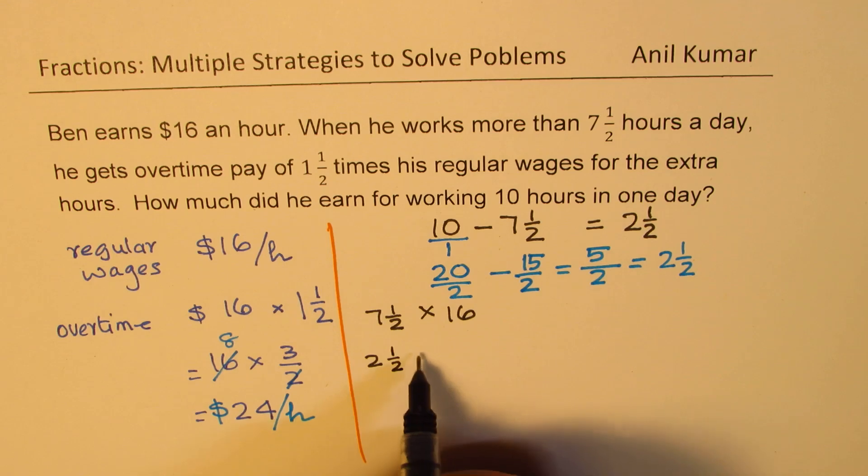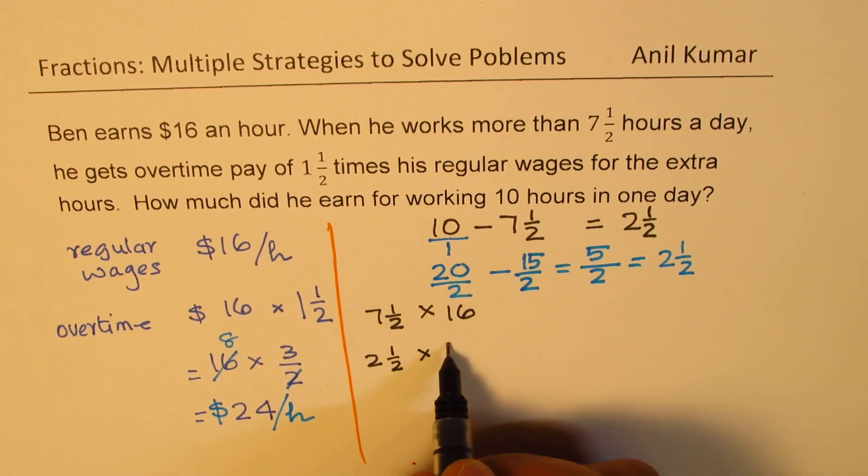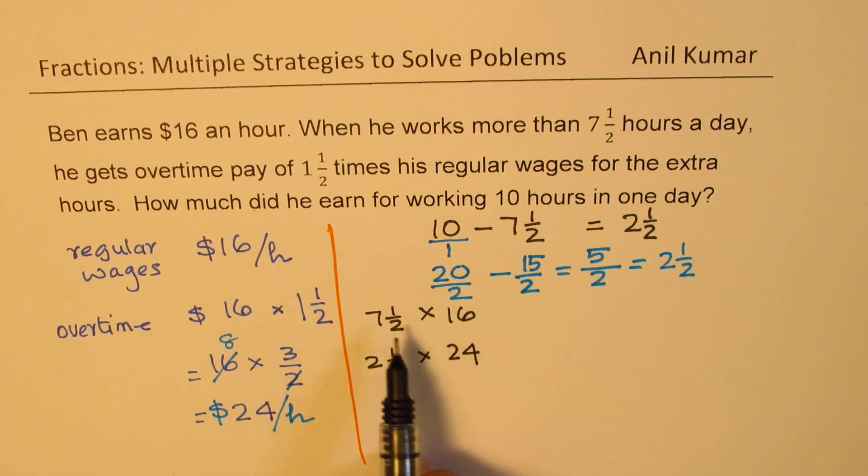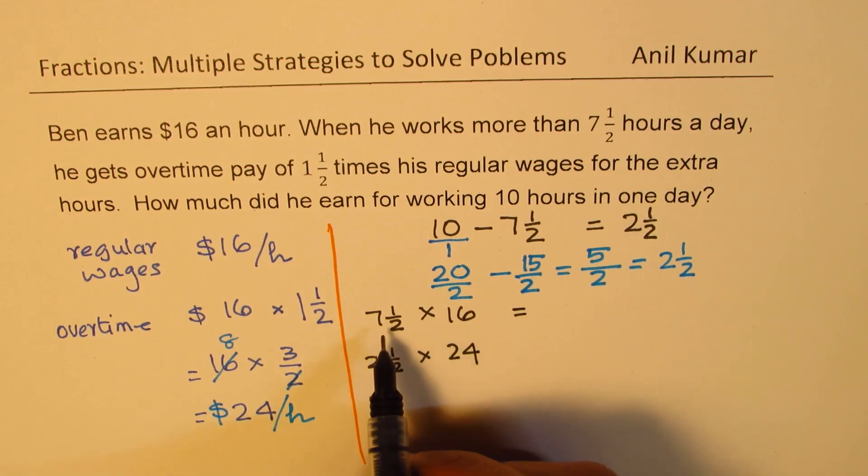But for 2 and a half hours, which he worked overtime, he is going to get at the rate of 24. Do you get the idea? So you have to multiply and then get your answer. So let us see how to get this answer.